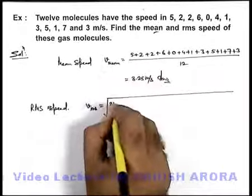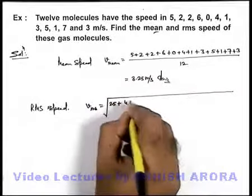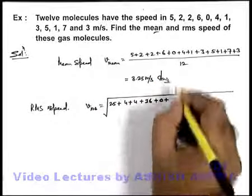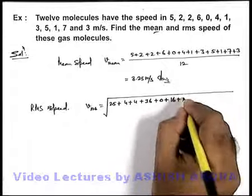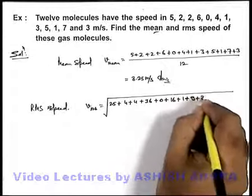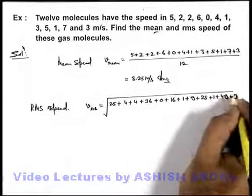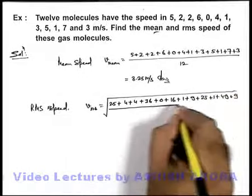The square of 5 is 25, plus 4, plus 4, plus 36, plus 0, plus 16, plus 1, plus 9, plus 25, plus 1, plus 49, plus 9, divided by 12.